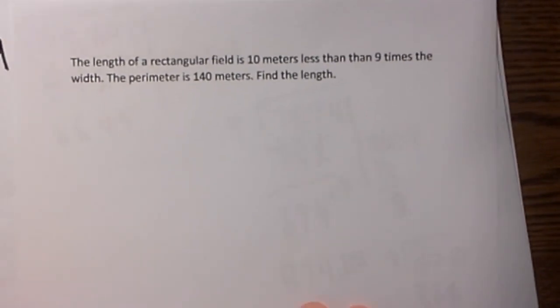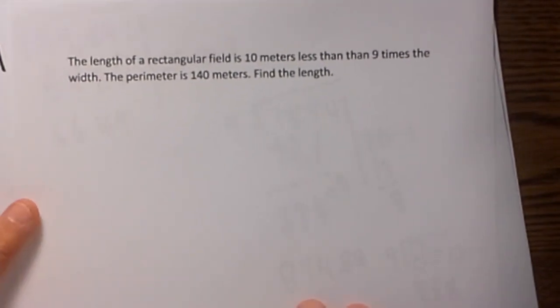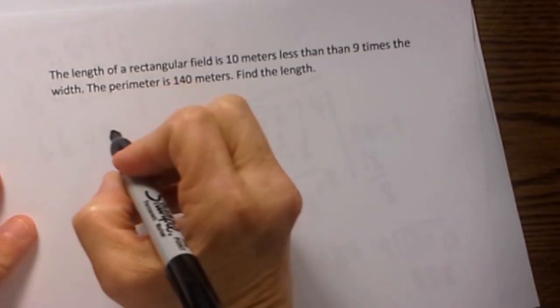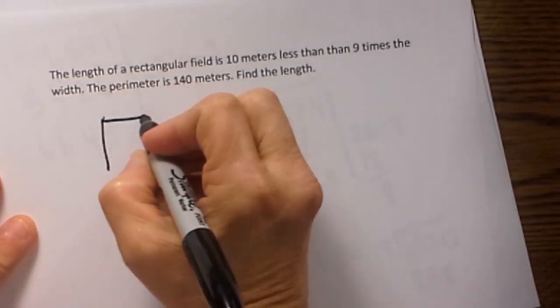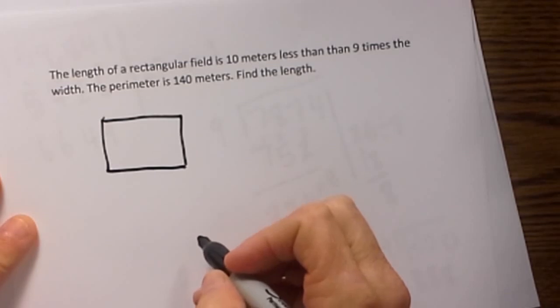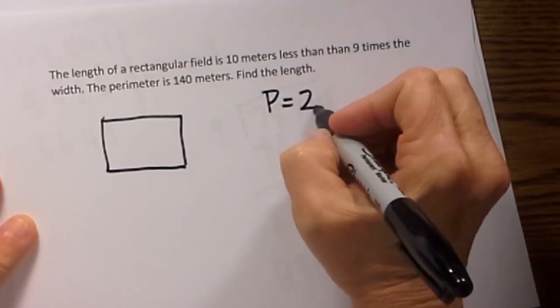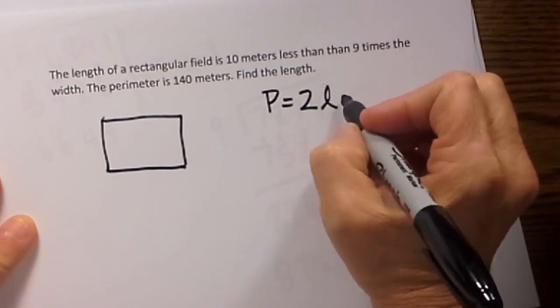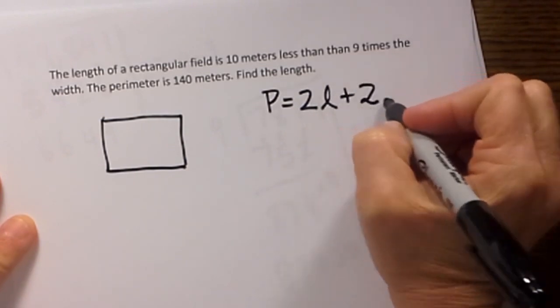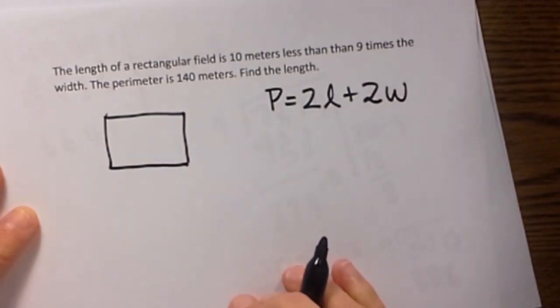This problem deals with perimeter. We need to know what our perimeter formula is for a rectangle. Let's first draw a picture of a rectangle. Our perimeter is when we add all the sides up. So we have 2 times the length plus 2 times the width and that equals our perimeter.